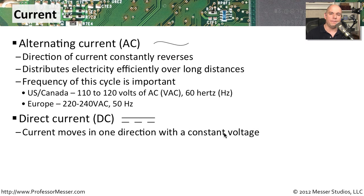The power supply then provides different voltages of direct current to the different voltage rails inside of your computer. Parts of your computer will need 5 volts; some parts will need 12 volts. It's the responsibility of your power supply to separate out and provide those different voltages to those different parts of your computer.